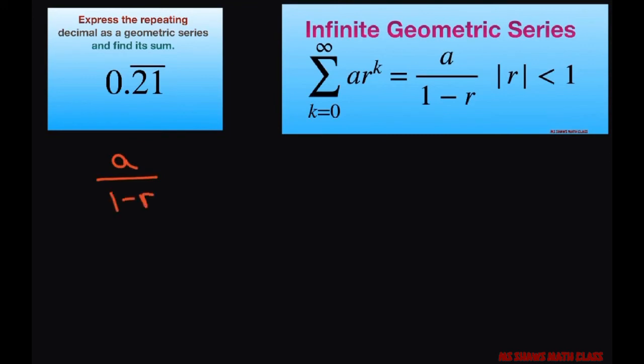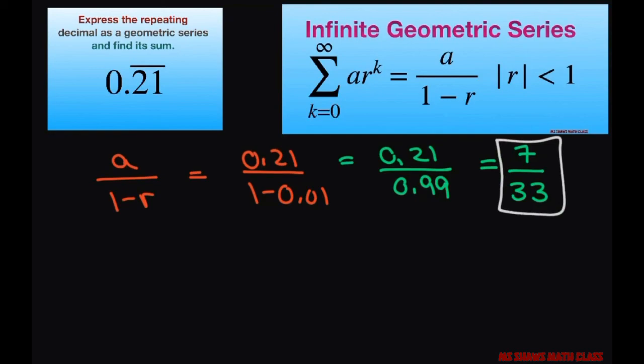This equals your a is 0.21 divided by 1 minus 0.01. This equals 0.21 divided by 0.99, which reduces to 7 divided by 33 when you divide both of these by 3.